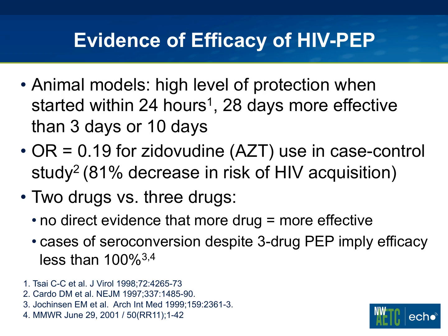Let's get into HIV PEP in a little more detail. I can fit most of the evidence for HIV PEP on a single slide. A lot of it comes from animal models. We know there's a high level of protection when PEP is started within 24 hours of exposure. In macaque model experiments with an HIV challenge, 28 days of PEP is known to be more effective than three days or 10 days. So we're left with starting PEP as early as possible and continuing for 28 days — and that's what's been done in subsequent trials.